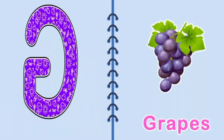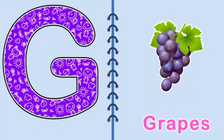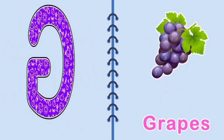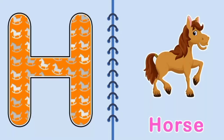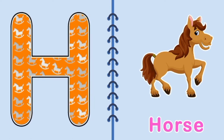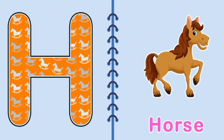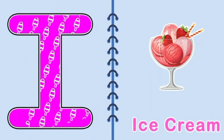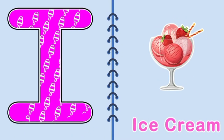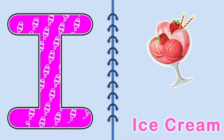G, G, Grapes, G for Grapes. H, H, Horse, H for Horse. I, I, Ice Cream, I for Ice Cream.